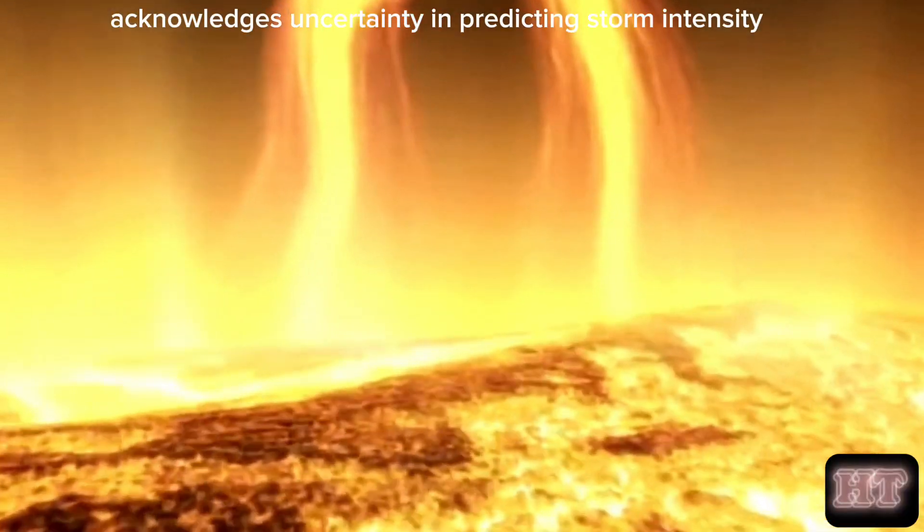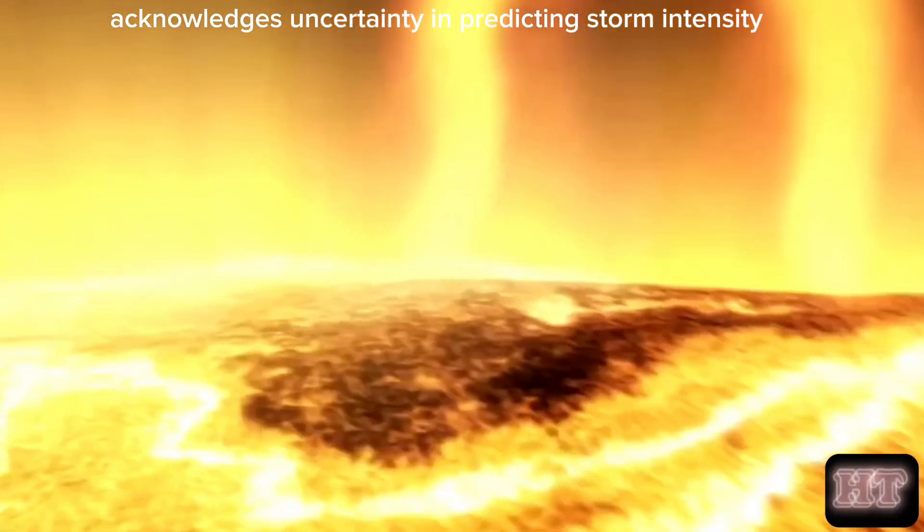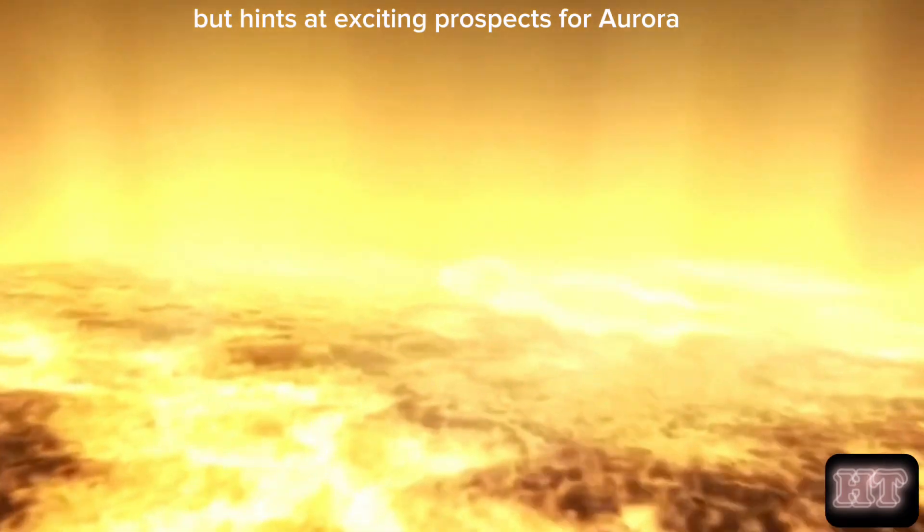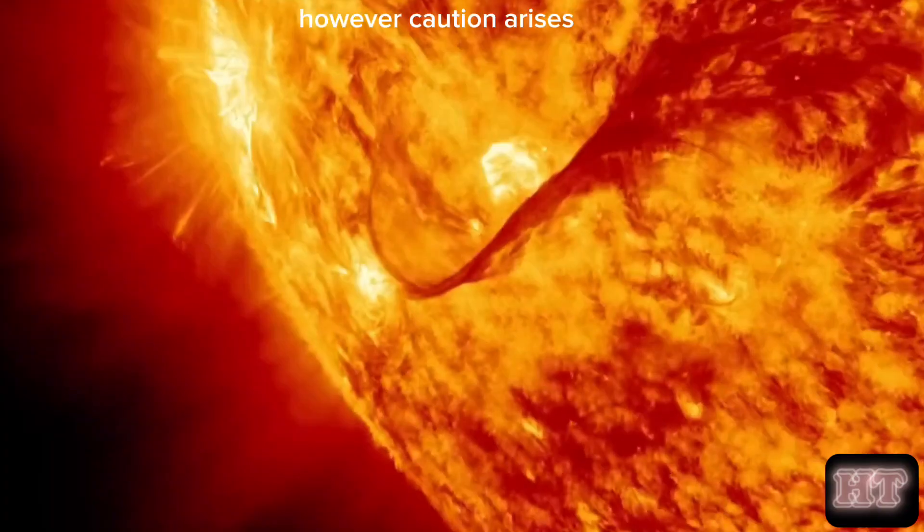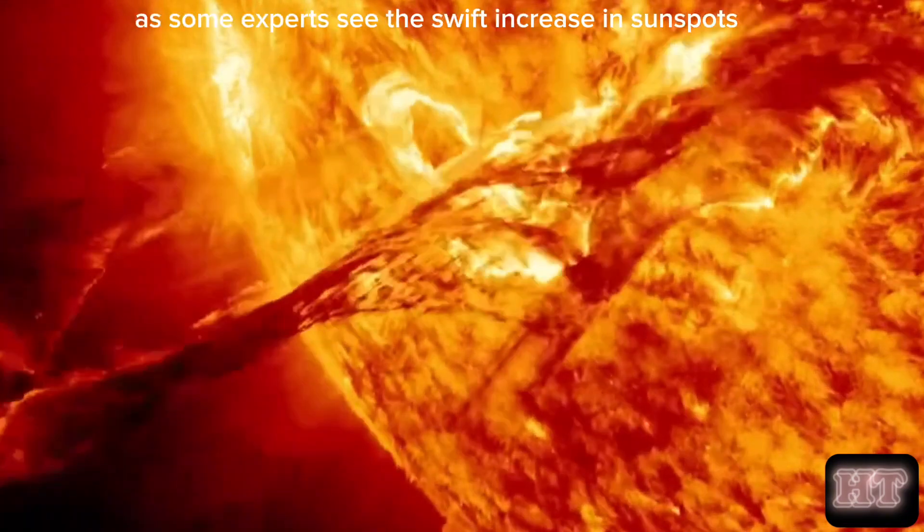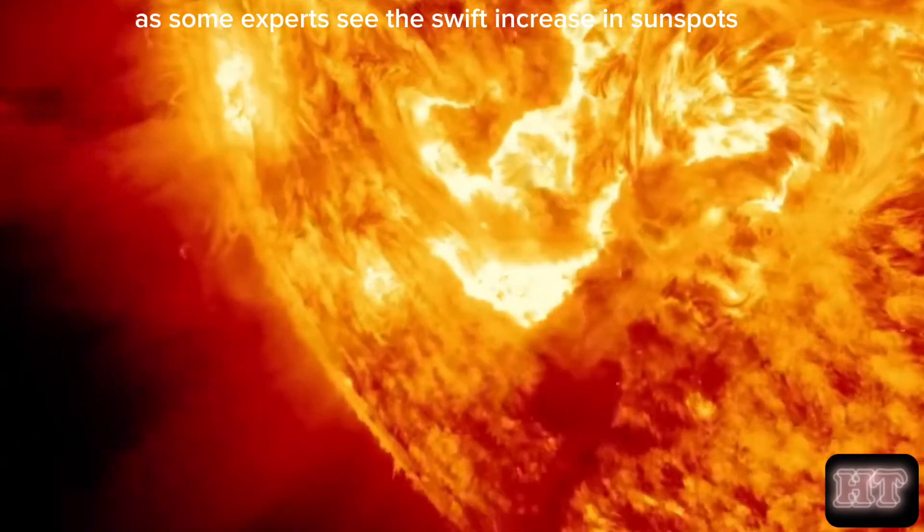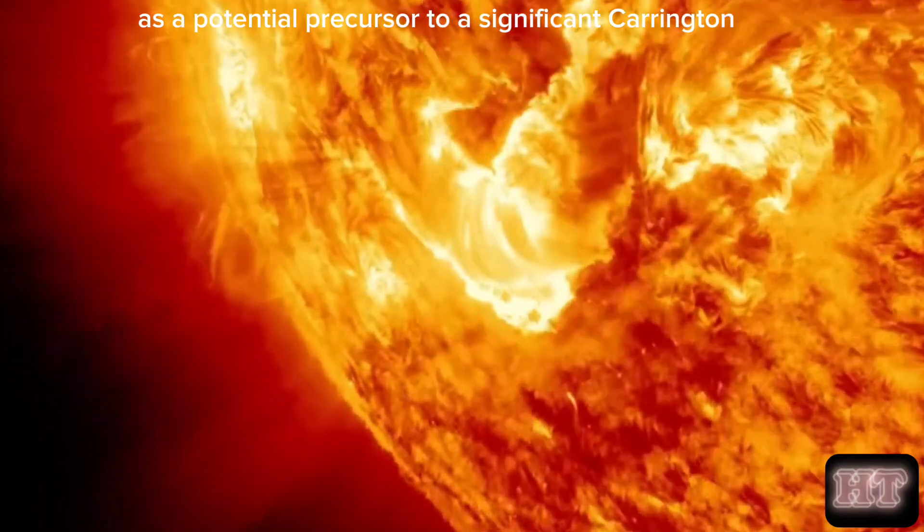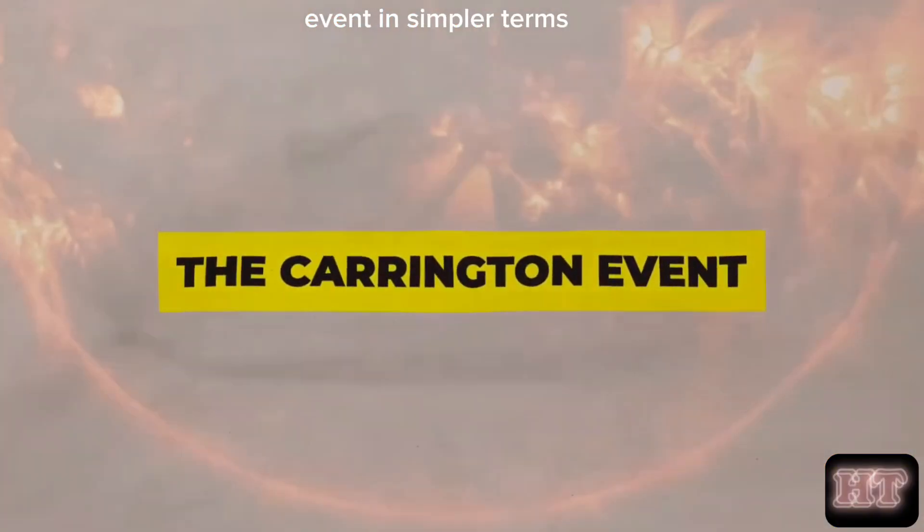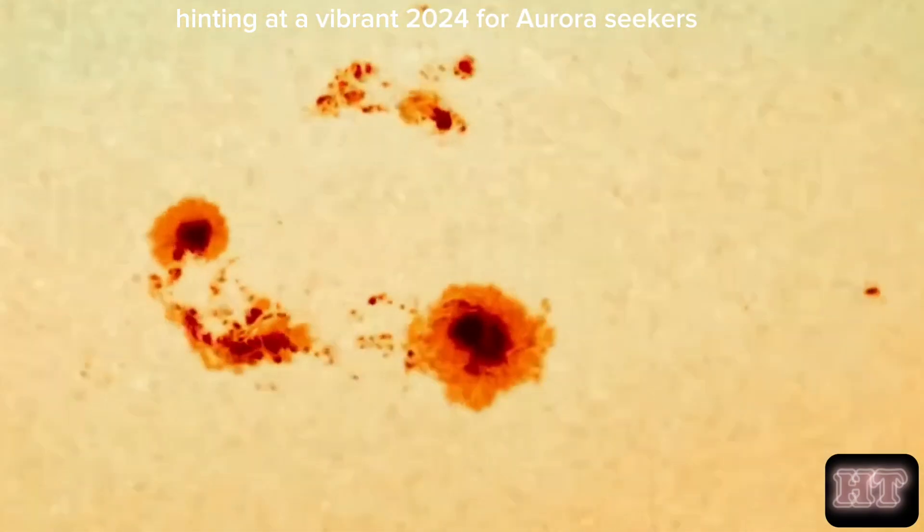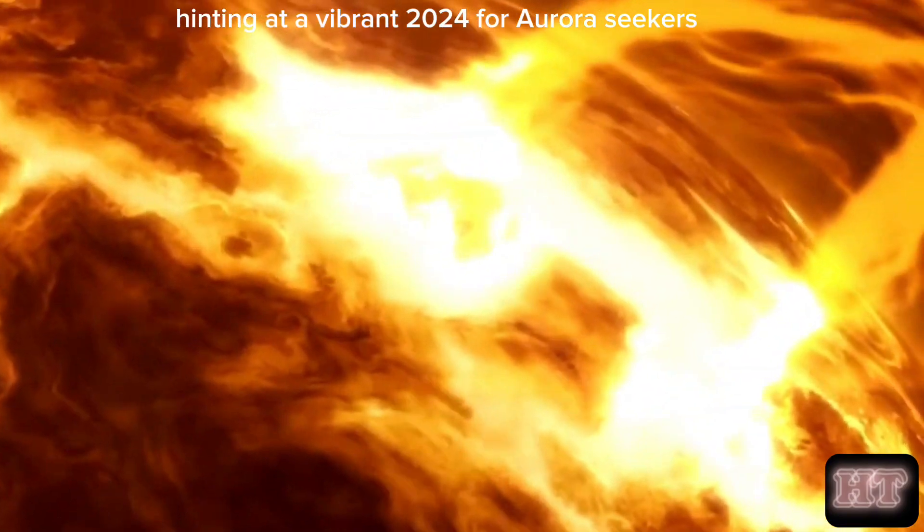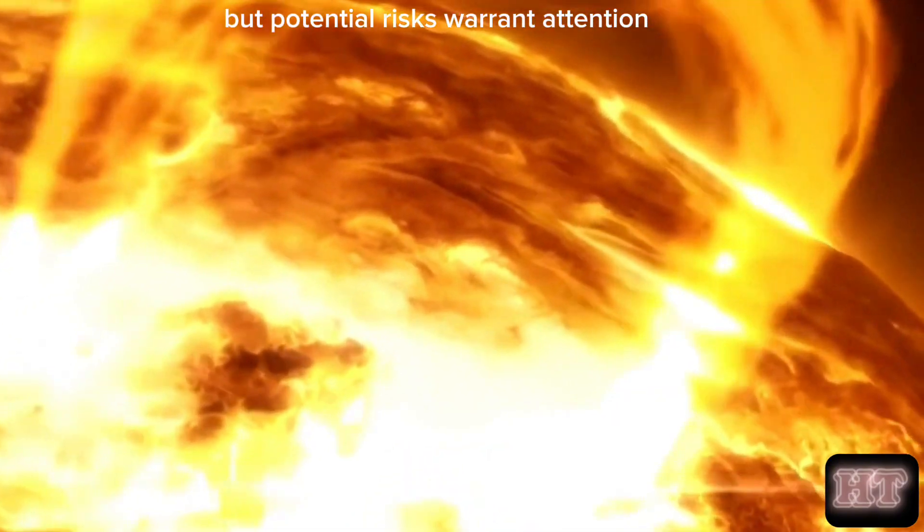Dr. Nandi acknowledges uncertainty in predicting storm intensity, but hints at exciting prospects for aurora enthusiasts in 2024. However, caution arises as some experts see the swift increase in sunspots as a potential precursor to a significant Carrington event. In simpler terms, the sun's magnetic activity affects sunspots, hinting at a vibrant 2024 for aurora seekers, but potential risks warrant attention.